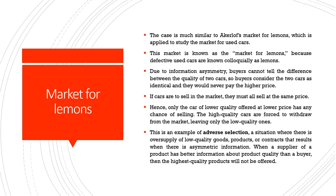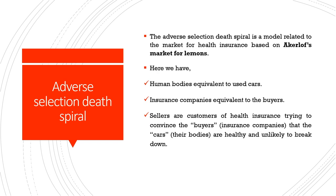Hence only the car of lower quality offered at a lower price has any chance of selling. The high quality cars are then forced to withdraw from the market, leaving only the low quality ones. This is an example of adverse selection — a situation where there is an oversupply of low quality goods or contracts that result when there is asymmetric information. When a supplier of a product has better information about product quality than a buyer, the highest quality products will not be offered. An associated concept is what is called the adverse selection death spiral, based upon Akerlof's market for lemons.